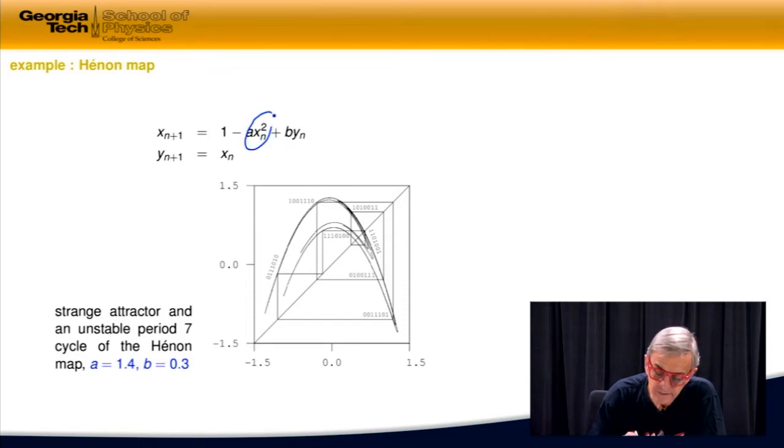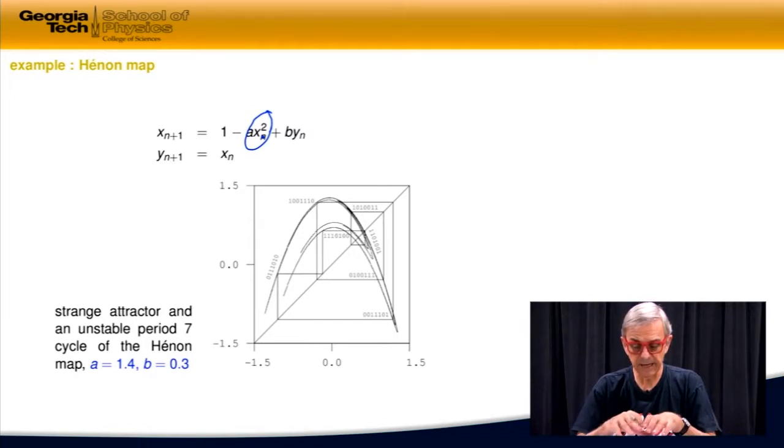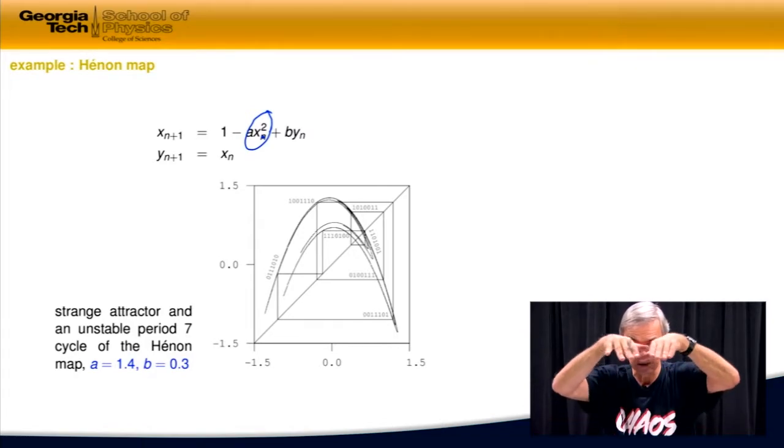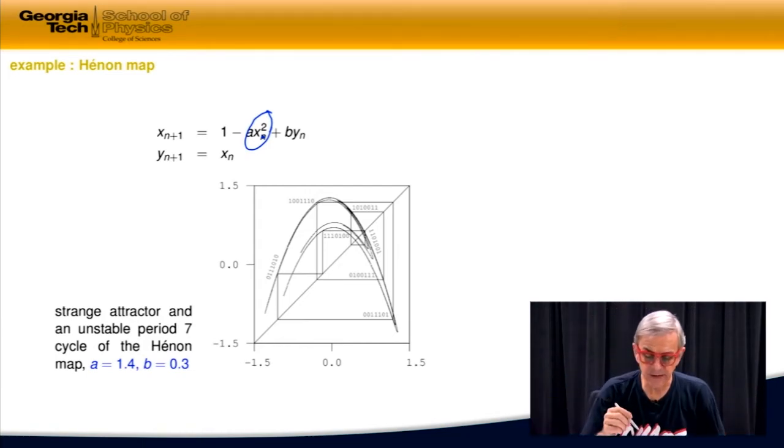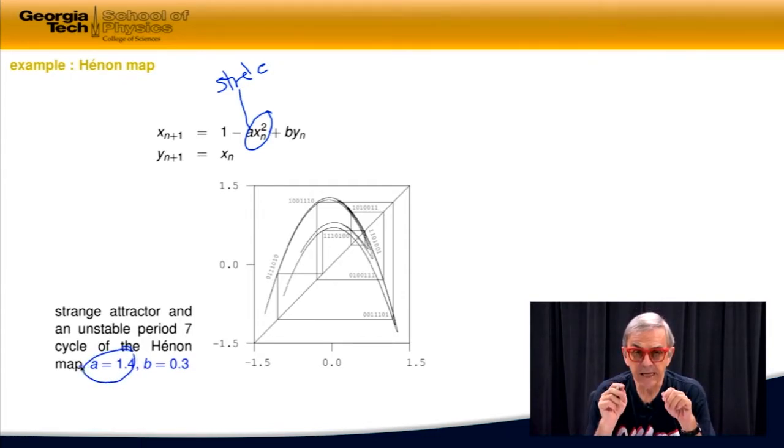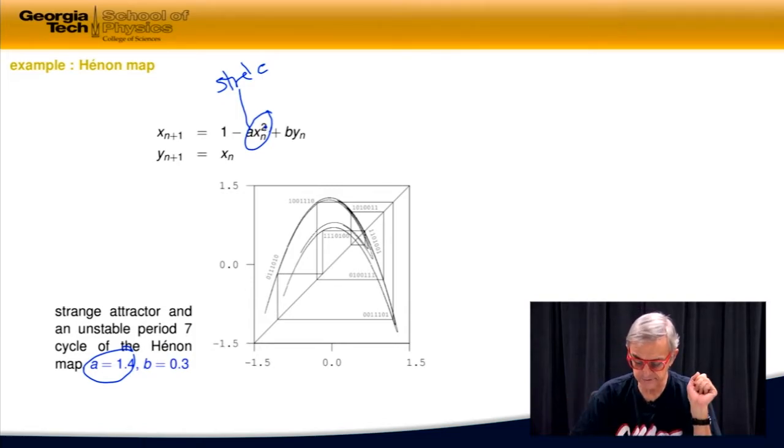Second order. So this is not a linear map. And what this map does, please read Kao's book about details. It takes an area in the plane, area in the plane, and then it stretches it. That's done by this factor A, stretch. See A is some number larger than 1, so it's stretching. And then you fold it. And folding is done by squaring, because what squaring does is it takes both positive and negative values. Here we have positive values, and here we have negative values.